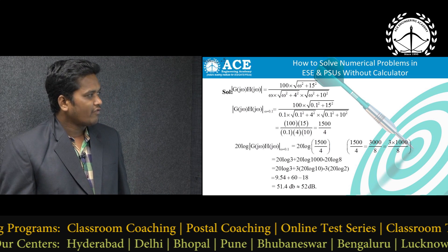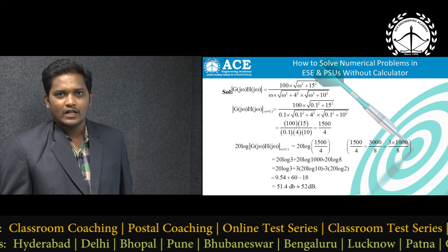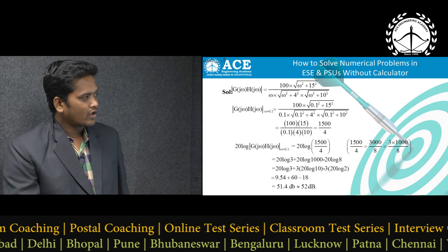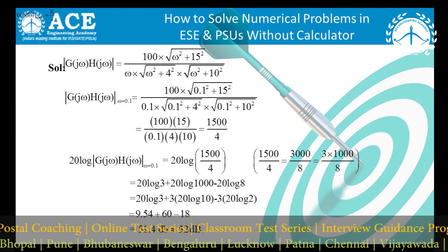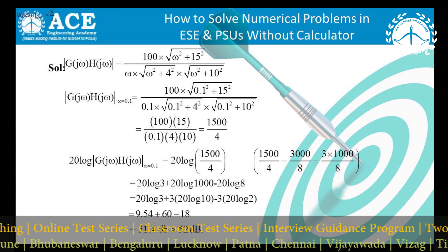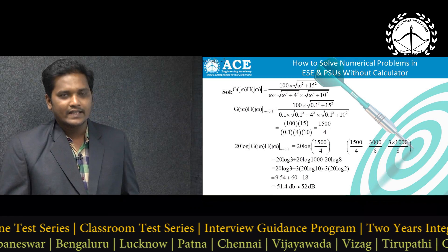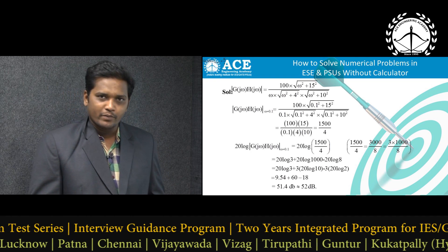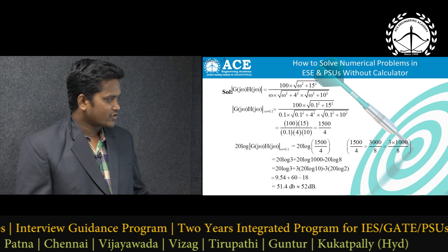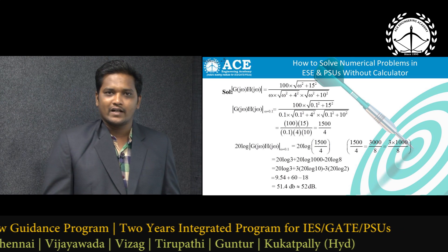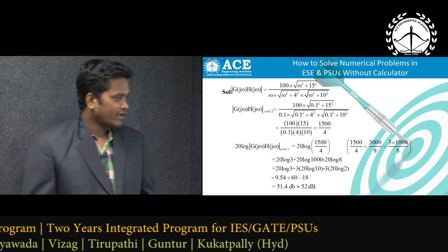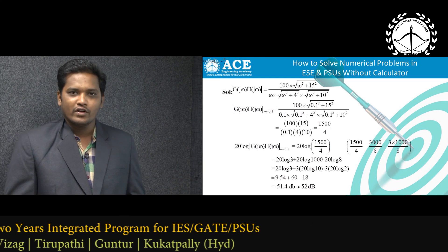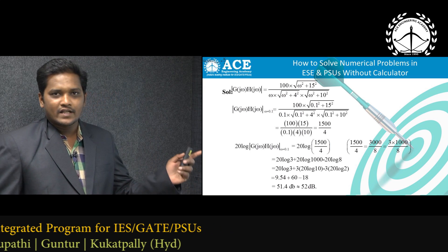Now we calculate the decibel value of 1500/4. Write 1500/4 as 3000/8 = (3 × 1000)/8. Applying logarithm: 20 log 3 + 20 log 1000 − 20 log 8. Since 1000 = 10³ and 8 = 2³, this becomes 20 log 3 + 3 × 20 log 10 − 3 × 20 log 2 = 9.54 + 60 − 18 = 51.54 dB, approximately 52 dB. If we remember the standard values from the first slide, this type of IES problem becomes easy to solve.